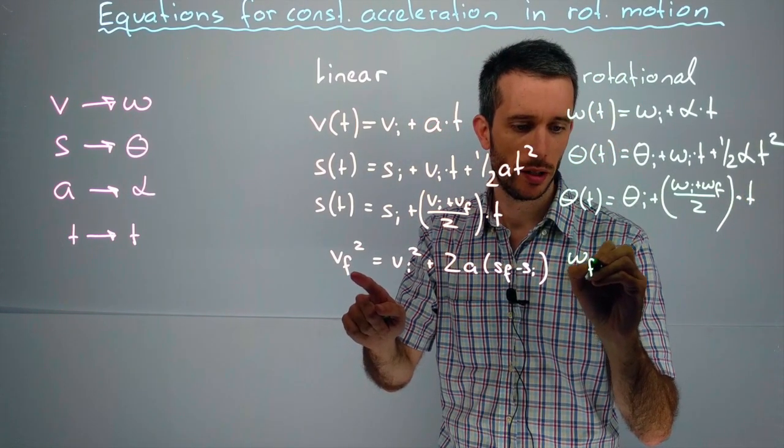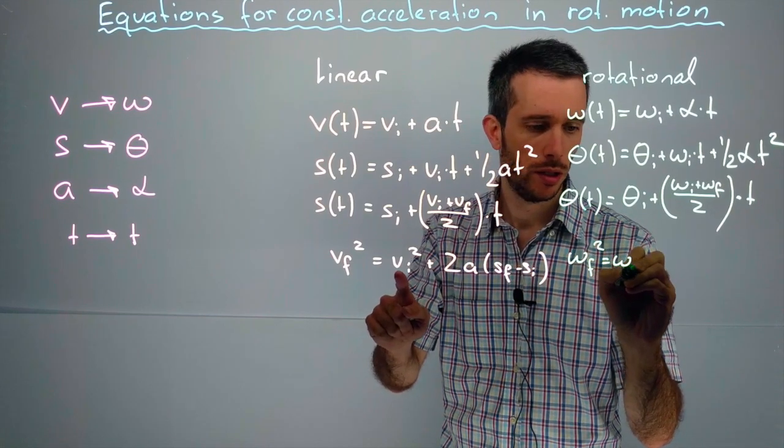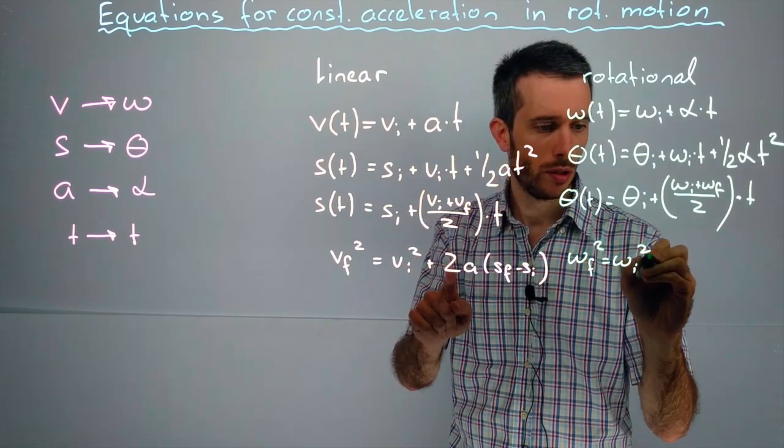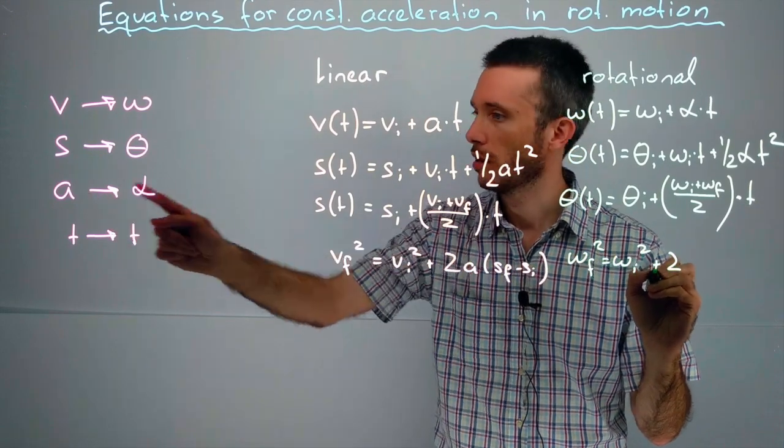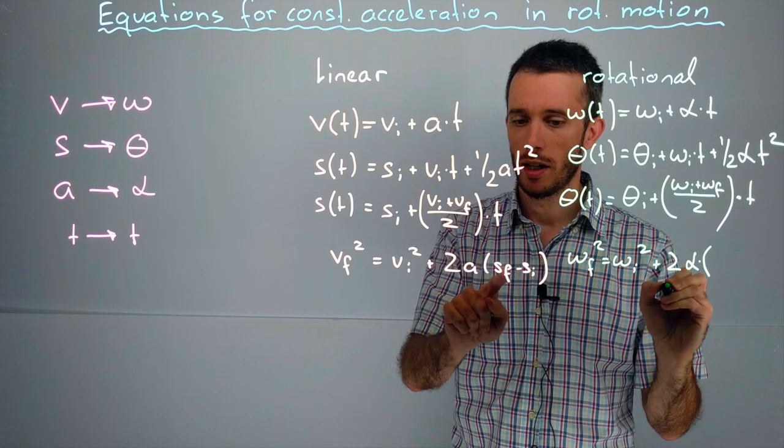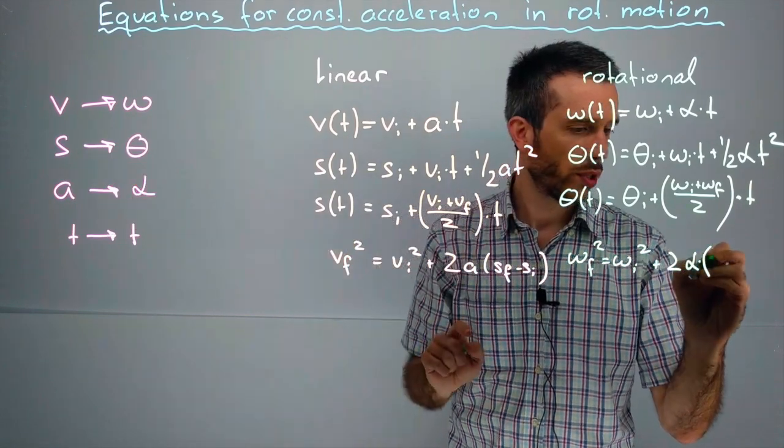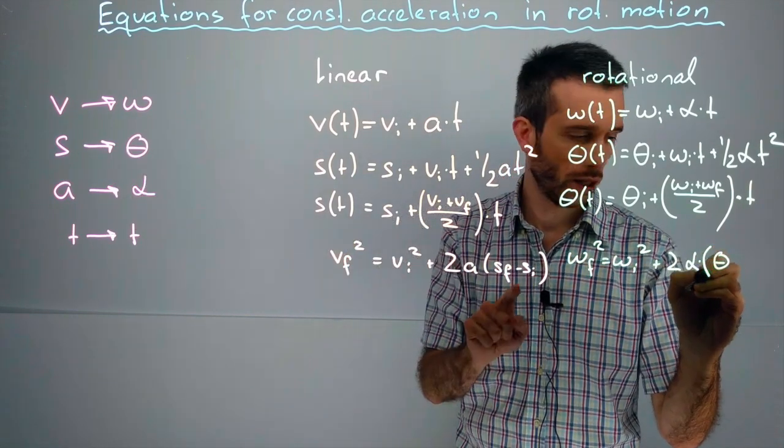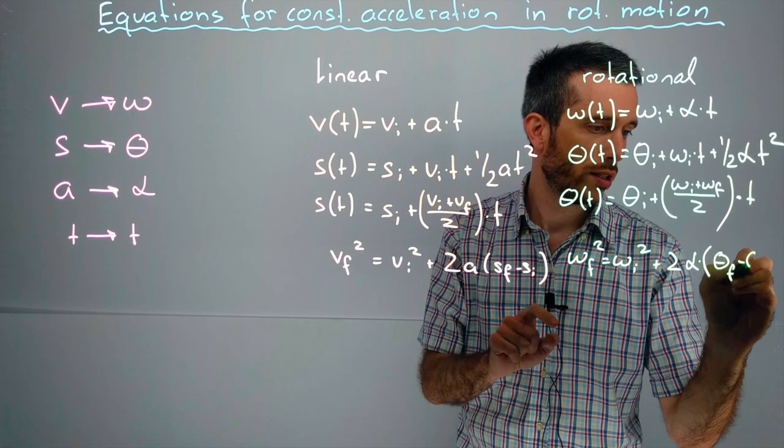And the last one, omega final squared is omega initial squared plus 2 alpha times theta final minus theta initial.